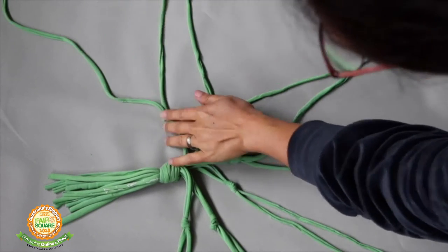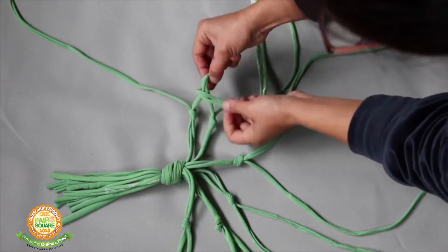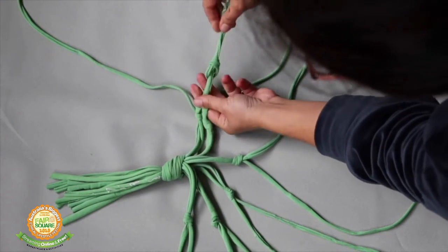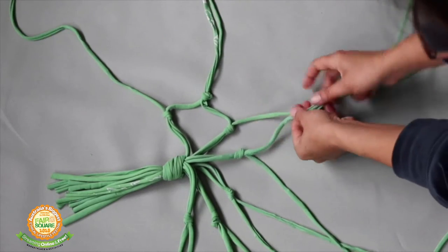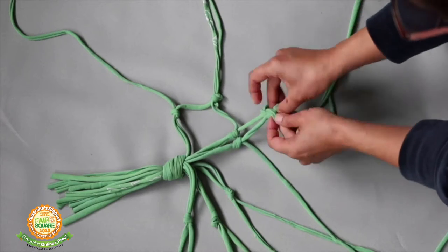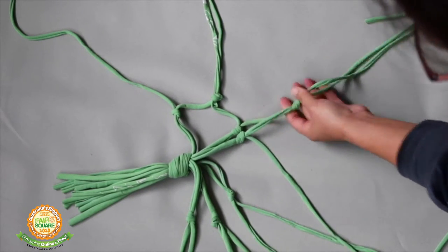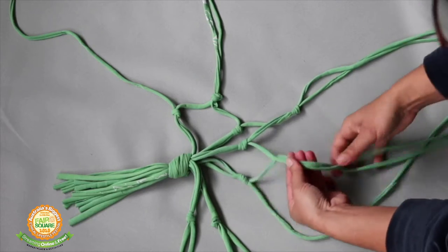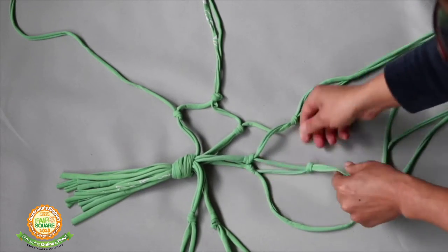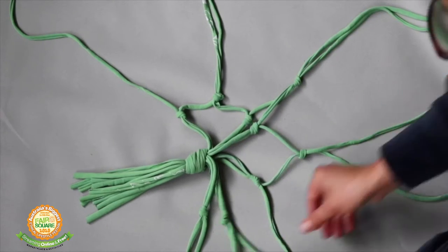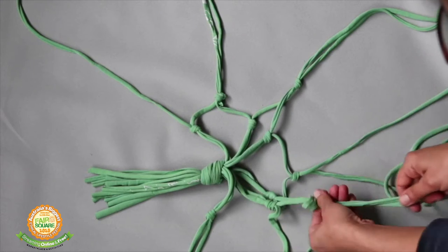The next step is actually to separate each of the pairs into a Y shape. Then what you're going to be doing is leaving the very top strand by itself, get the next two and tie a knot, and then the next two. You go around your fan shape tying knots the same distance apart, so around seven centimeters.